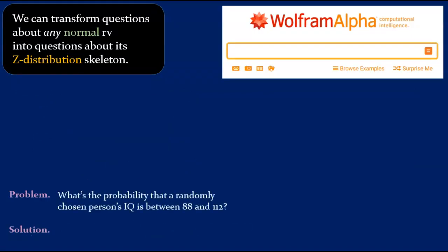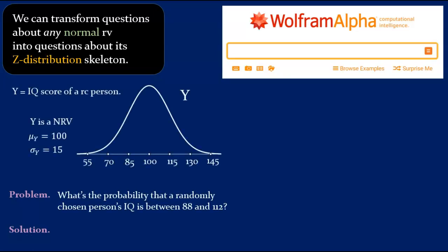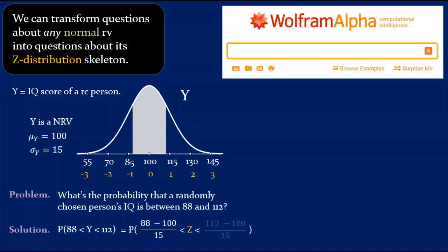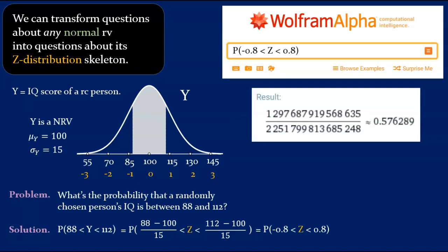Let's do another example. What's the probability that a randomly chosen person's IQ is between 88 and 112? We want the probability that y is between 88 and 112. Since y is normal, we can turn this into a question about z. To translate from y to z, we standardize 88 and 112. After some arithmetic, we find that this becomes the probability that z is between minus 0.8 and positive 0.8. And this is precisely the sort of thing we can type into Wolfram Alpha. When we do so and hit enter, we find that the probability we seek is about 0.58. Hence, about 58% of people have IQs between 88 and 112.